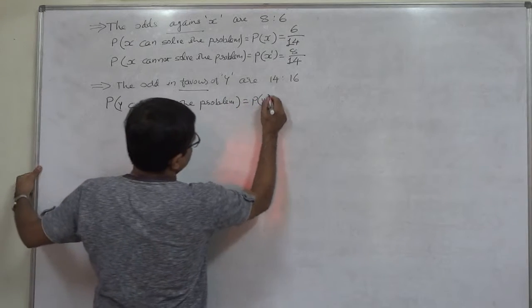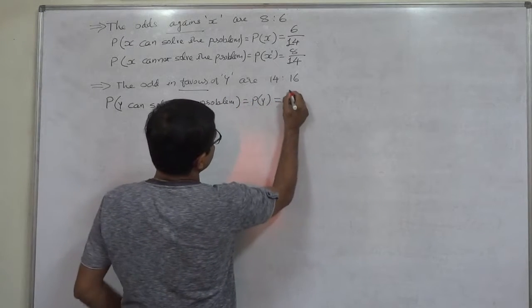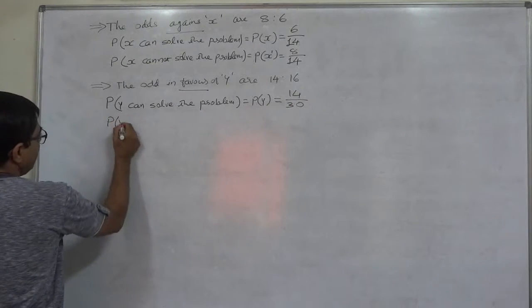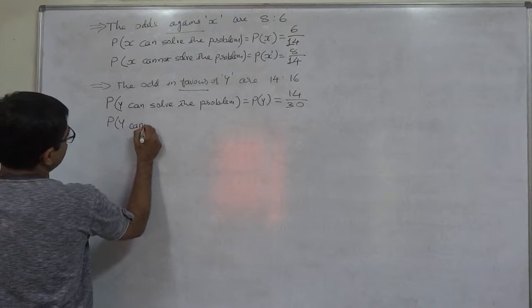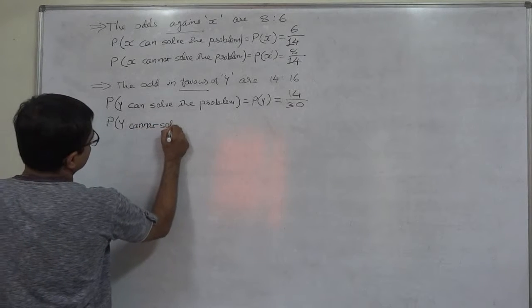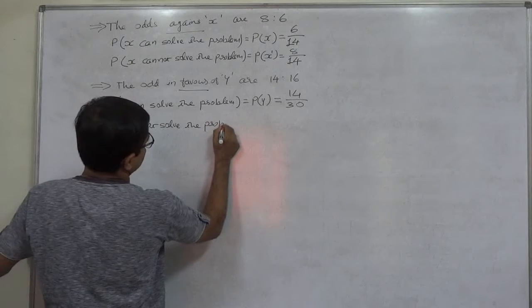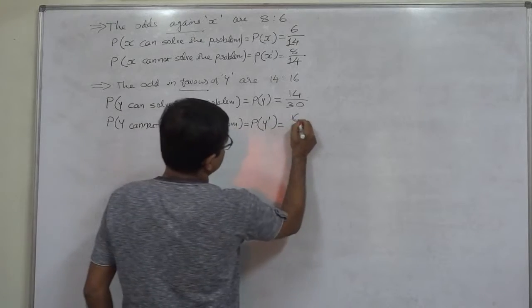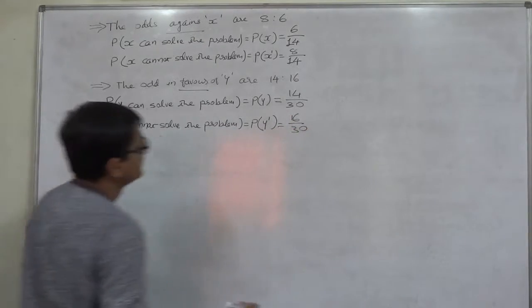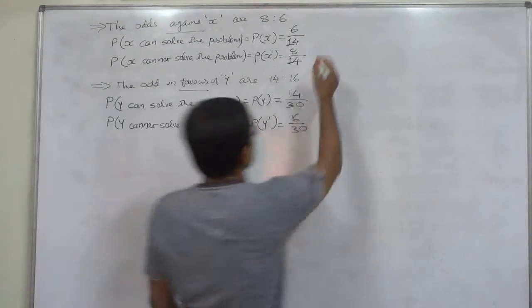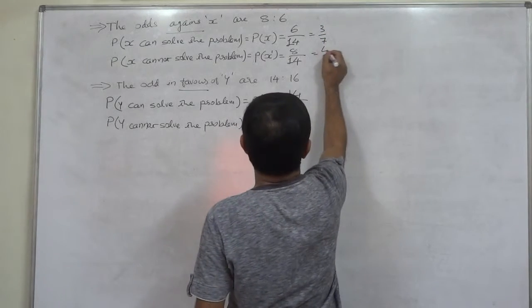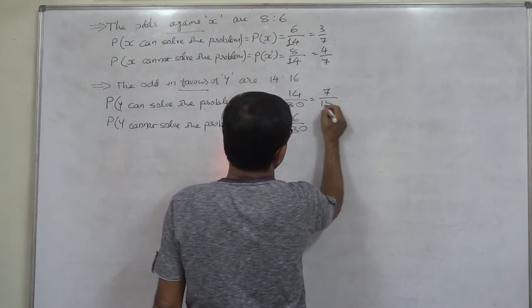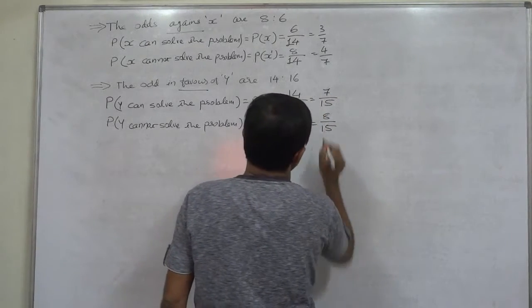P(Y) = 14/30 and P(Y complement) = 16/30. Simplifying: P(X) = 3/7, P(X complement) = 4/7, P(Y) = 7/15, and P(Y complement) = 8/15.